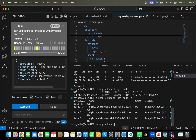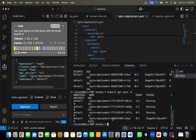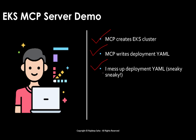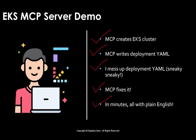If we run 'kubectl get pods -A' now, our pods are running. To recap: we asked MCP to create the EKS cluster, which it did. It also wrote the deployment YAML for NGINX. Then I changed the deployment YAML to introduce an error. It determined the error and fixed it. And all this in minutes — using just plain English to tell it what to do.